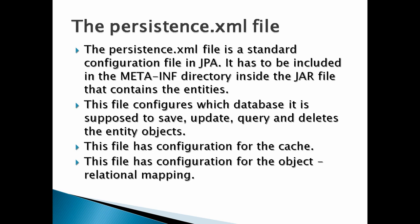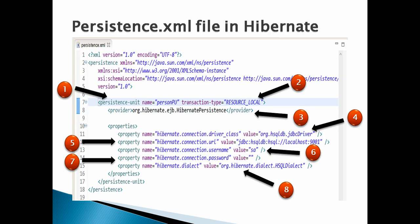The persistence.xml file is a standard configuration file in JPA. It has to be included in the META-INF directory inside the jar file that contains the entities. This file configures which database it is supposed to save, update, query, and delete the entity objects. It also has configuration for the cache, which improves performance by implementing a cache framework, and configuration for object-to-relational mapping.